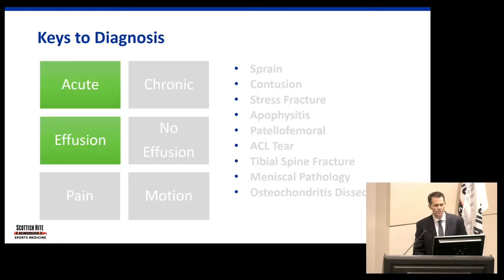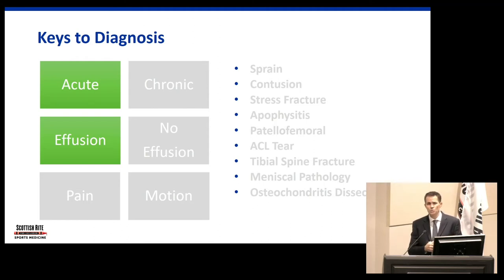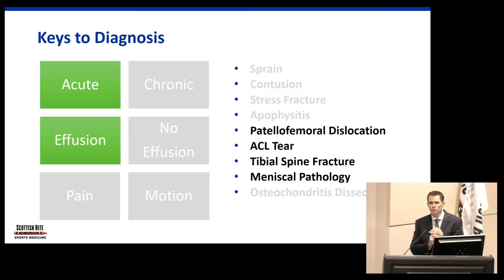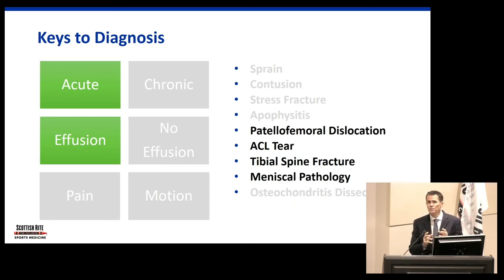Let's go back to our list. Now let's say we've got an acute problem, but there IS an effusion this time. Now we've got things like ACL tear or other intraarticular ligamentous injury, a kneecap or patellar dislocation, a tibial spine fracture — which is a fracture inside the joint — or maybe an acute meniscal tear.